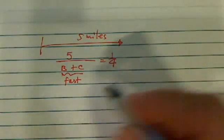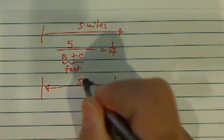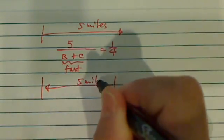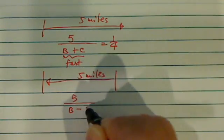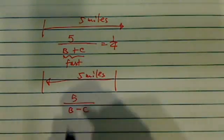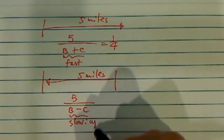Now let's see what happens when she goes upstream. Same distance, five miles, but this time she's going to go a lot slower because her speed is going to be slower. This is slow, and it's upstream.